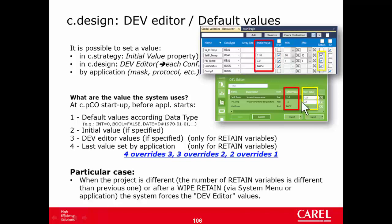So you will see in the DEV Editor only the variables that are in retain. After that, the last value set by the application — for example, if we change the setpoint in the mask — the next time the controller starts, it will take that value. This also works only for retain variables.